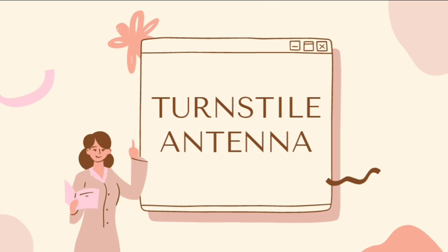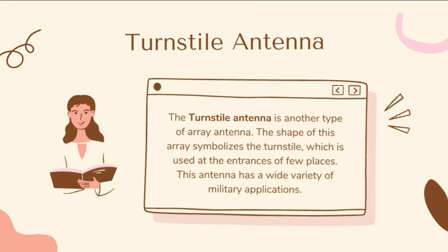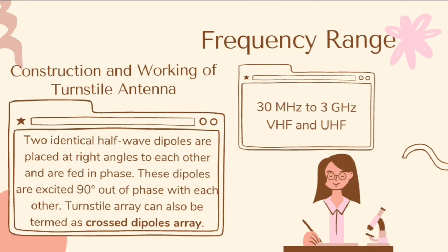First in line is the turnstile antenna. The turnstile antenna is another type of array antenna. The shape of these arrays symbolizes the turnstile, which is used at the entrances of few places. This antenna has a wide variety of military applications. The frequency range in which the turnstile antennas operate is around 30 MHz to 3 GHz, which belongs to the very high frequency and ultra-high frequency bands. Two identical half-wave dipoles are placed at right angles to each other and are fed in phase, and these dipoles are excited 90 degrees out of phase with each other. The turnstile array can also be termed as a crossed dipoles array.